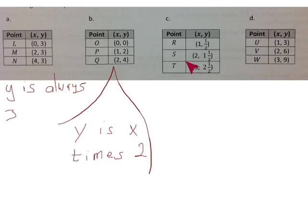Next we're looking at chart C. We have (1, 1 half), (2, 1 and 1 half), (3, 2 and 1 half). It appears that y is always 1 half less than x.